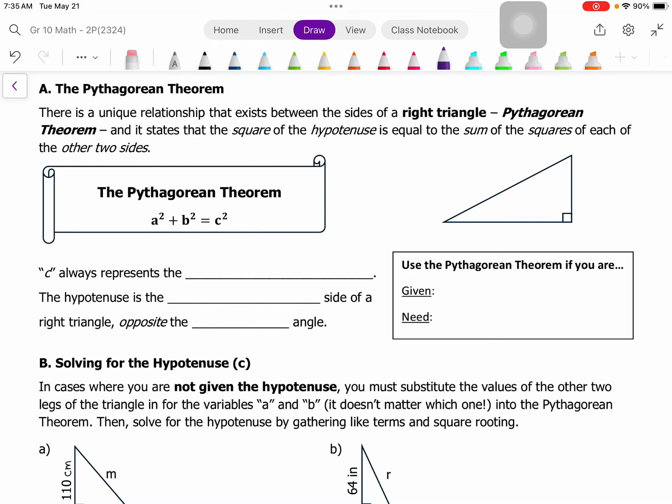In this lesson, we're going to learn how to use the Pythagorean Theorem to solve for an unknown side in a right triangle.